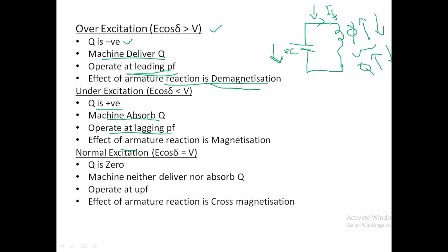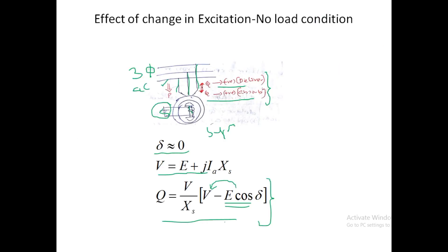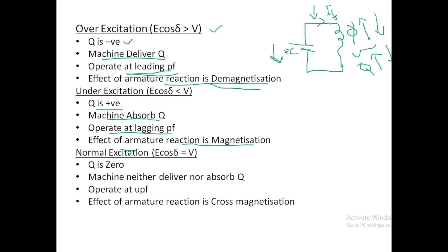Effect of armature reaction under under-excitation is magnetization. If E cos delta equals V, then Q will be equal to 0 — the machine neither delivers nor absorbs reactive power, it is operating at UPF, and the effect of armature reaction is cross-magnetization.